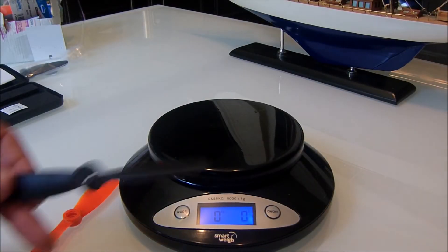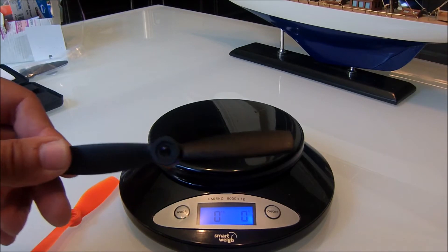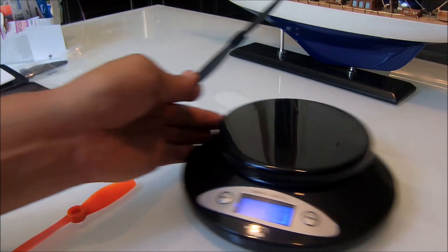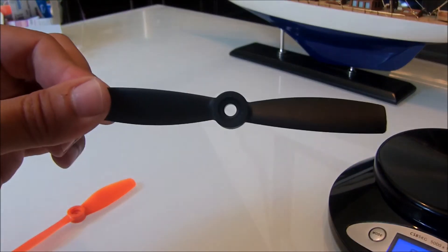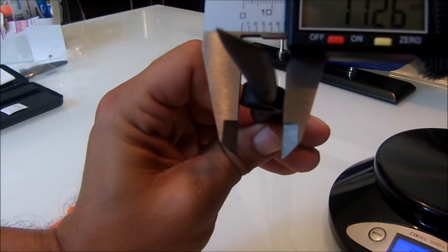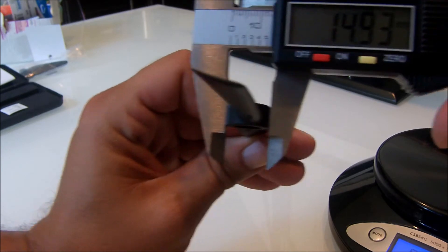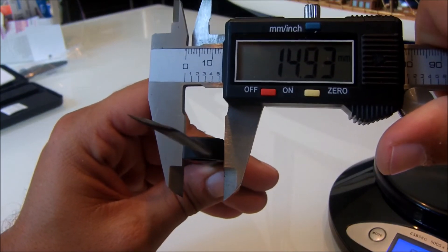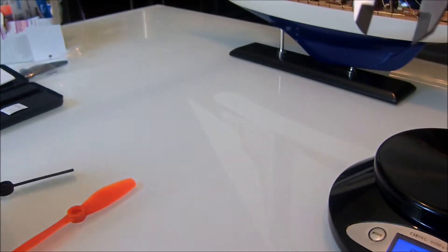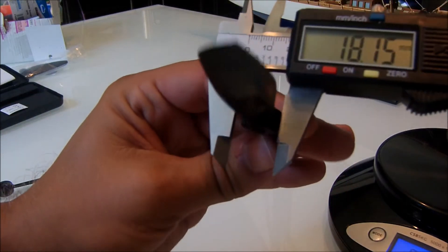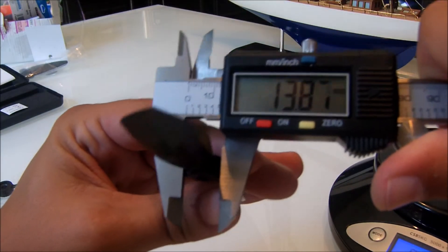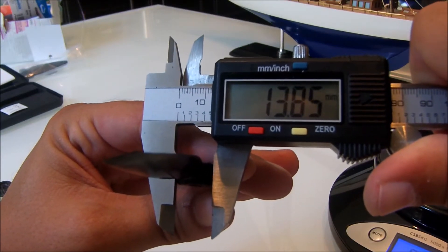Alright, so now we're going to compare the middle hub on both of these. The HQ prop middle hub width is 14.93 millimeters. The new Gemfan middle hub width is 13.85 millimeters.